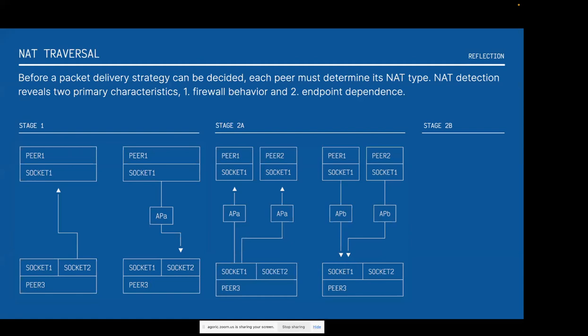Endpoint independence would mean that anytime I send a message out to anybody, it's going to be seen as the same information — so it's endpoint independent. Some people refer to that as an easy NAT, and that is the least amount of work to traverse. If I get back two different responses from the peers, then I can know that I am endpoint dependent, meaning every time I send a message out I'm getting assigned different information by my NAT, and that makes it really difficult to traverse. In that case, we end up needing to get into hole punching — using a birthday paradox to send out a bunch of packets and try to receive some of them.